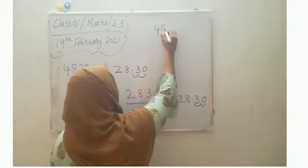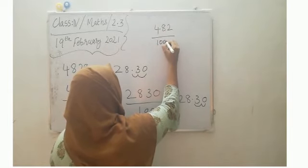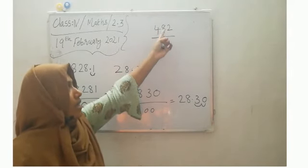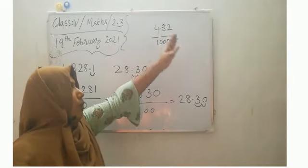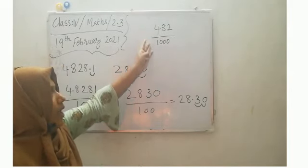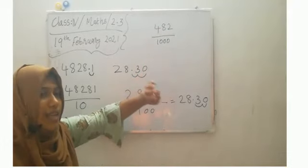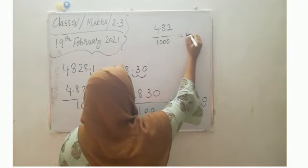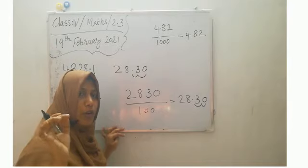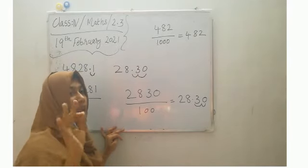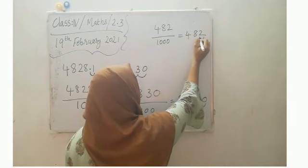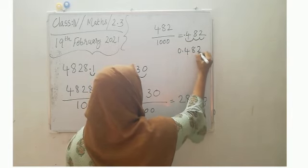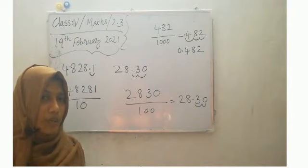Another example: four hundred and eighty-two by thousand. To convert to decimal form, here we have a fraction. Check the number of zeros — one, two, three. So first of all, write the number as given. We have to put the decimal point after three places, so one, two, three — and here is the decimal. So we can write it as zero point four eight two.